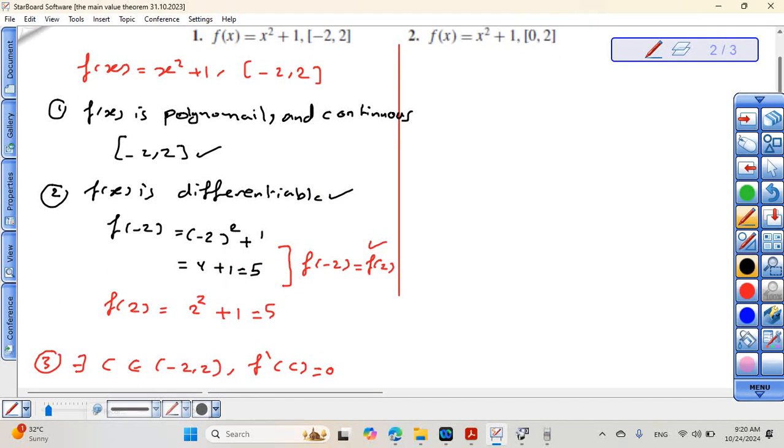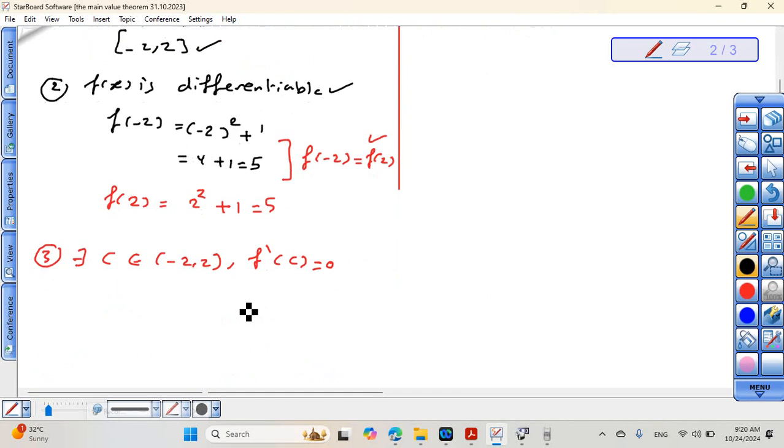What is the derivative of x squared plus 1? 2x equals 0. Then replace x by C: 2C equals 0. Divided by 2, we can write C equals 0. This belongs to the interval from negative 2 to 2. All the conditions of Rolle's Theorem are satisfied, and the value of C is 0.